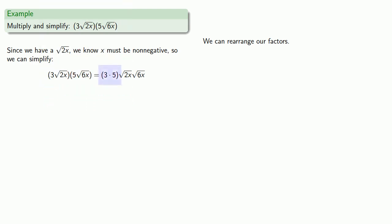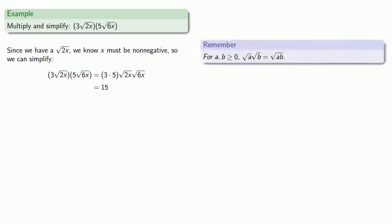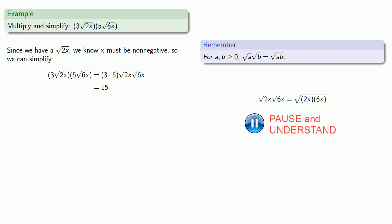We know how to multiply 3 by 5, so let's go ahead and do that. Since our radicands are non-negative, the product of square roots is the square root of the product. So square root of 2x times square root of 6x is the same as the square root of 2x times 6x.